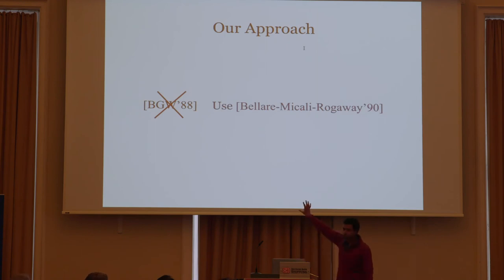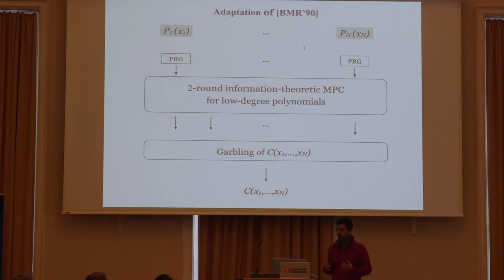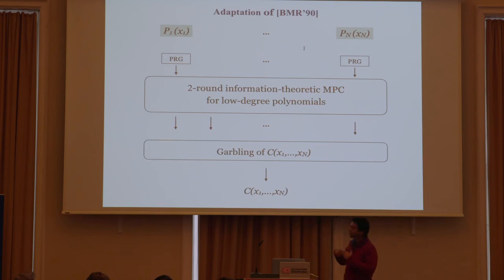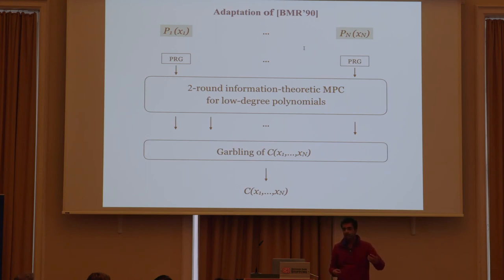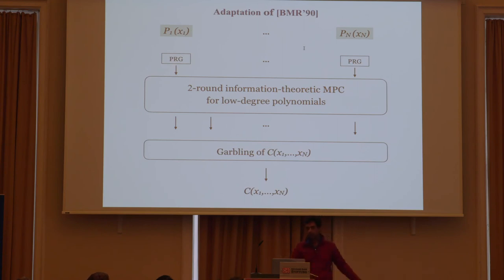Our approach is to not start with BGW. Implicit in the GVW construction was a two-round BGW protocol. Instead, we use BMR. The advantage of BMR is that it gives a two-round MPC protocol for polynomial-size circuits, as opposed to just NC1. Roughly, BMR works as follows: every party does some PRG computation, the output is fed into a two-round information-theoretic secure MPC protocol for low-degree polynomials, and every party at the end recovers a garbling of the circuit being securely computed on inputs X1 through XN. They then run the garbling evaluation algorithm to recover C of X1 through XN.